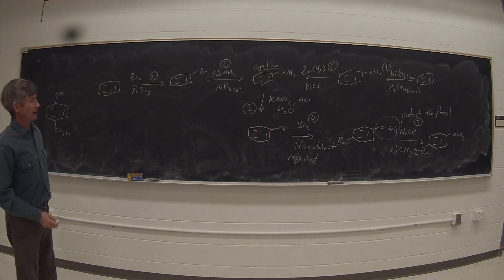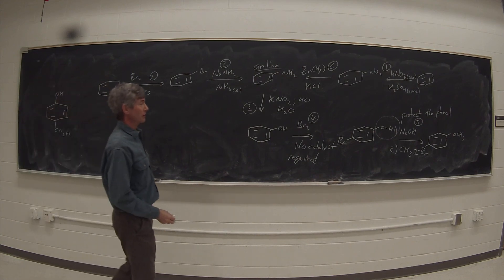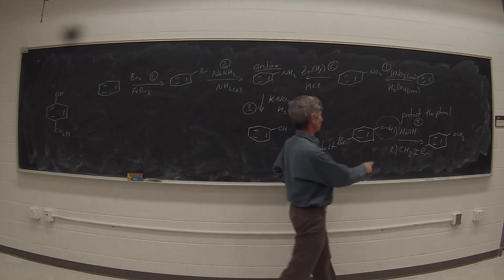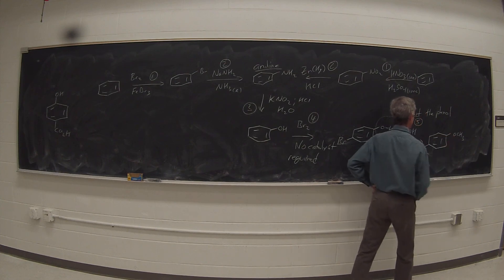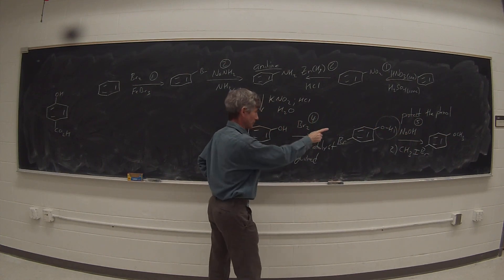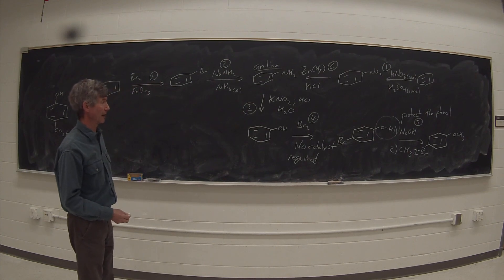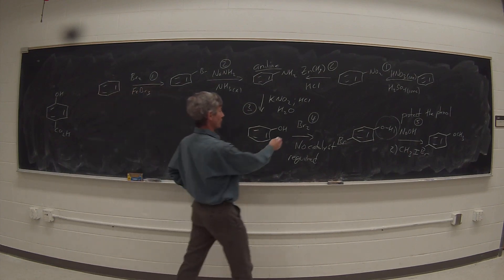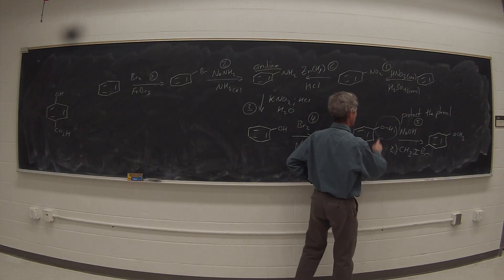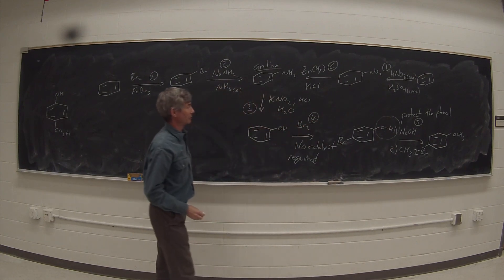Steps four and five can in fact be done in the opposite order. You could protect the phenol first as the methyl ether and then do your bromination, because the methoxy group is also a very strongly activating ortho-para director. So I've chosen to brominate first and then protect, but protecting first and then brominating would work equally well.